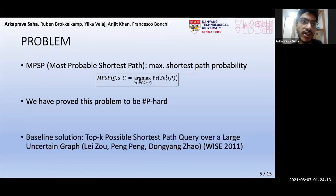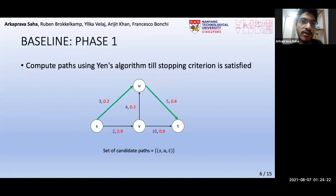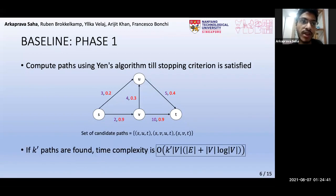This paper in WISE 2011 proposes a solution to this problem, which we use as our baseline. It runs in two phases. First, in phase 1, it computes paths in ascending order of lengths using Yen's algorithm till a stopping criterion is reached. For example, in the graph below, this green path is obtained first, then this, and finally this. These three constitute the candidate paths for the next phase. If K' paths are obtained, then the time complexity is as shown here.